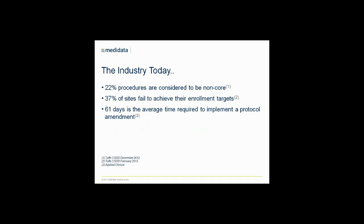So why are we here today? Several industry statistics point to opportunities to improve the cost, speed, and risk profiles of studies. Studies have shown on average 22% of procedures in Phase II and III trials were found to support non-core objectives as well as endpoints, and some — if not many — of these procedures actually can be eliminated.